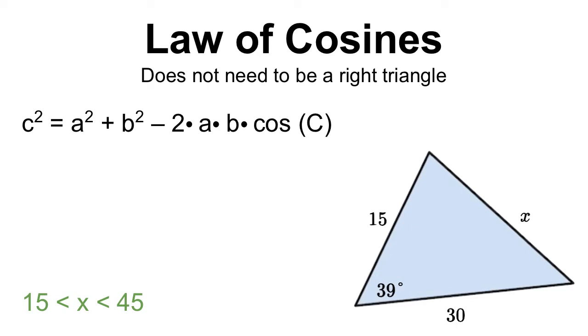The next thing that I'm going to do is identify which angle and which side length are opposite from each other. In this example, the 39 degrees is opposite from X, and that's going to be important when we set up our equation.